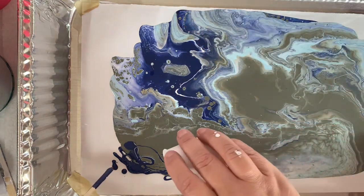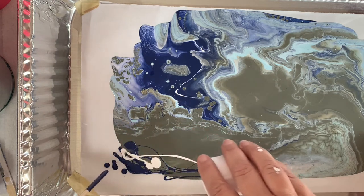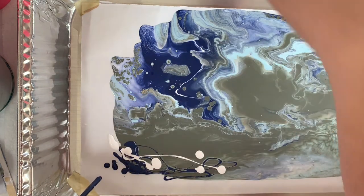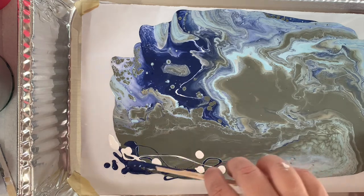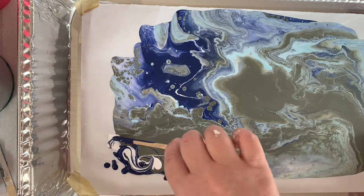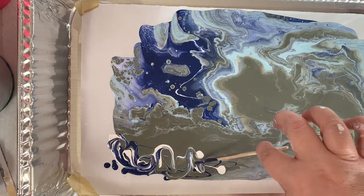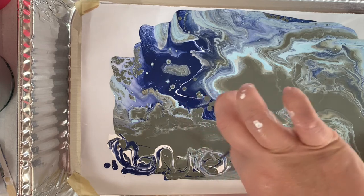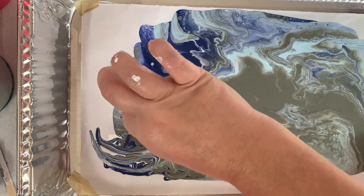Now if you're wanting lots of cells I would recommend taking a spray bottle with alcohol. I use 91 rubbing alcohol and whenever you spray that on when it's wet like this the alcohol reacts to the water in the paint and it will create cells. I just didn't want a whole bunch of cells so I just left what came naturally and I liked it.